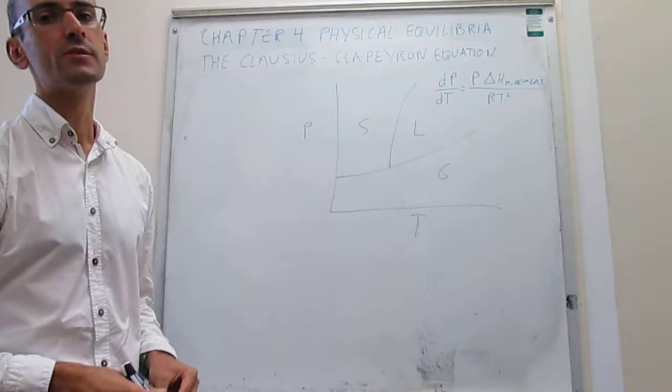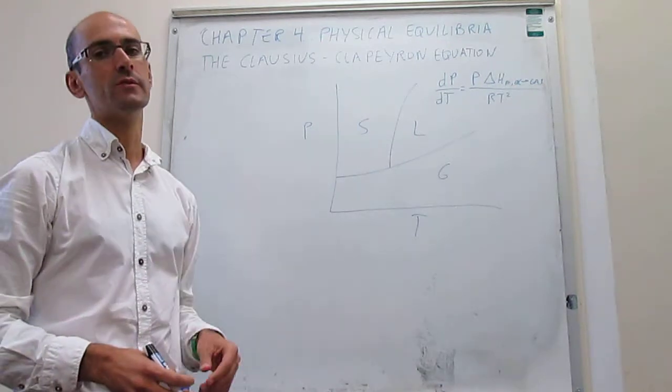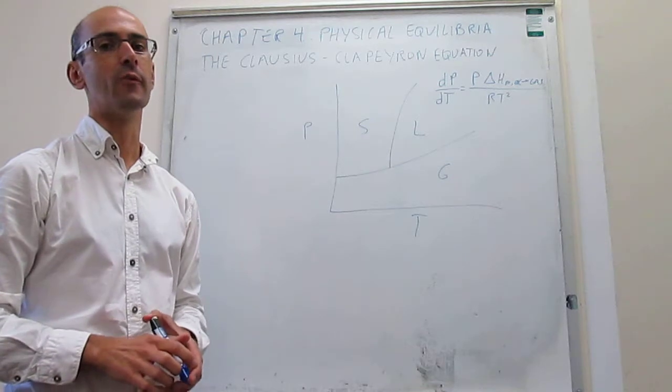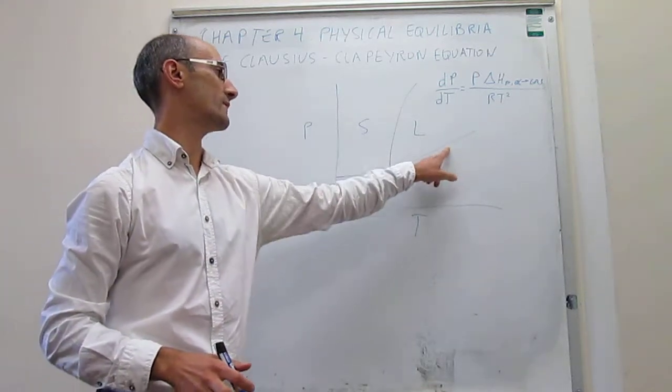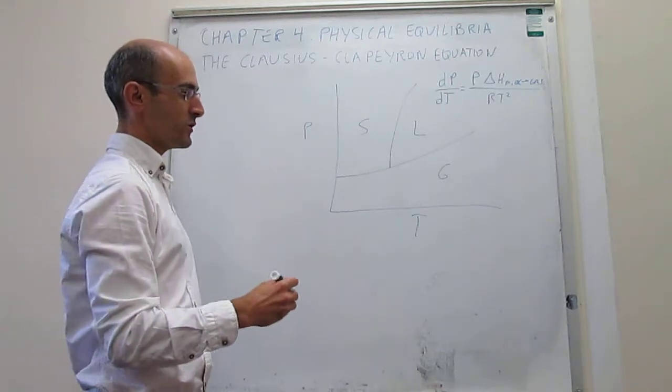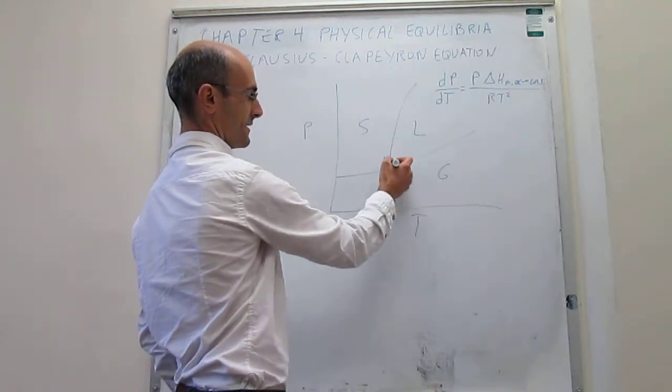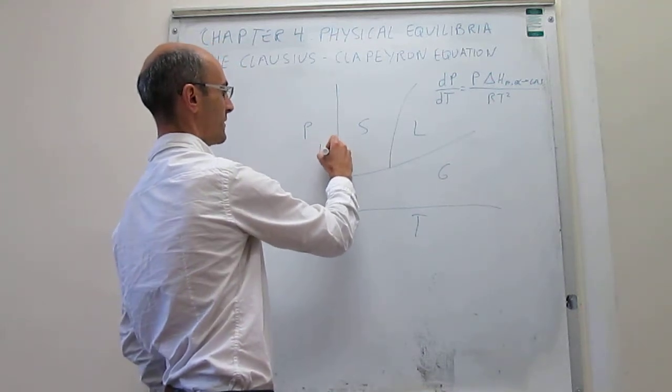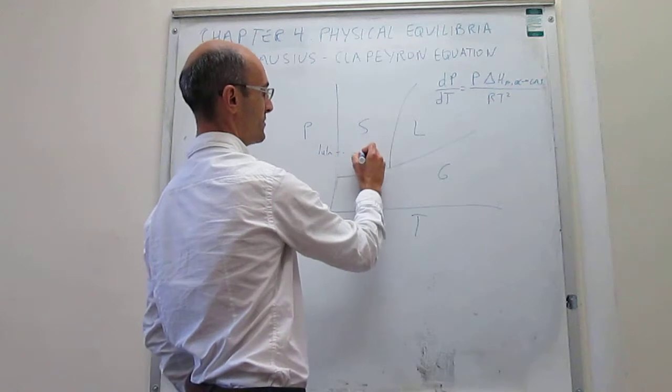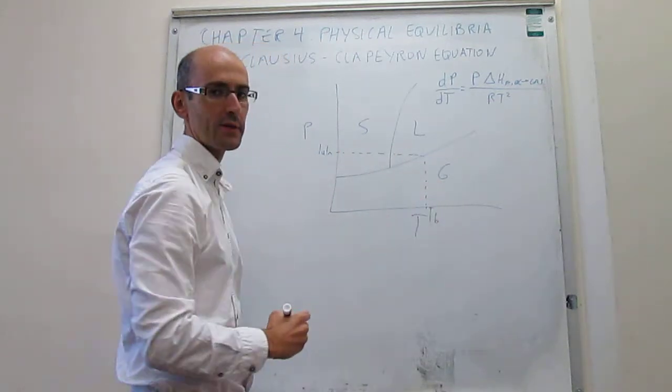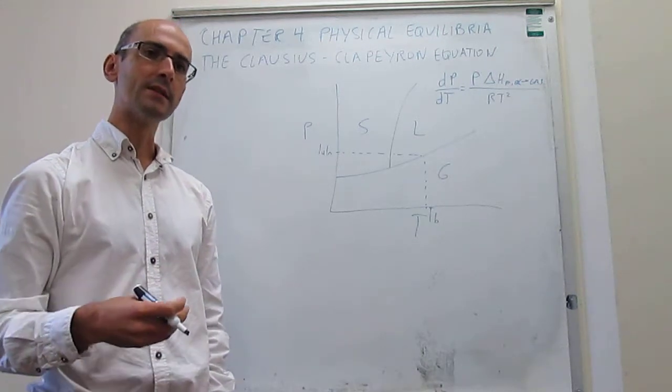We can use that expression to predict phase equilibria points for either phase transition. Usually, you're going to know one point in this line, and that will be the normal boiling point. If you select one atmosphere of pressure, that tells you the boiling point for that particular substance.